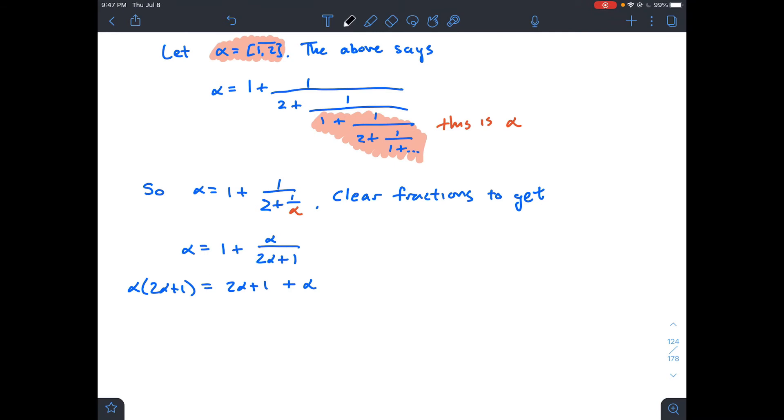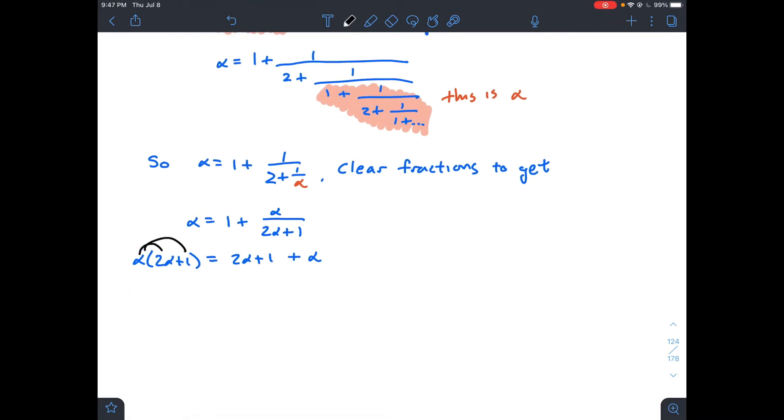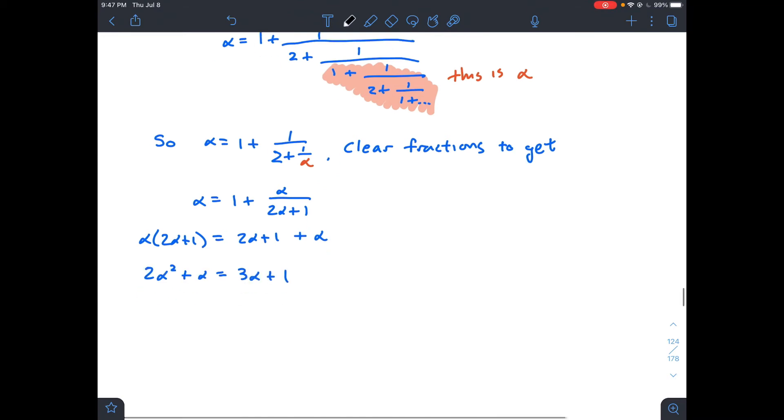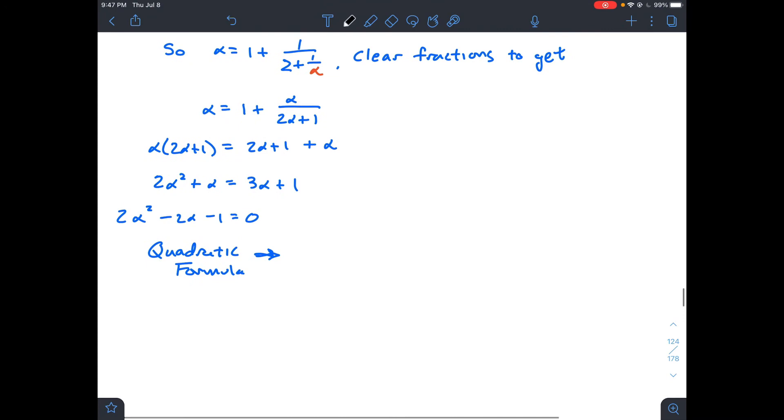I'm going to take this 2 alpha plus 1 and multiply it over. I'm going to clear fractions finally. We're going to distribute this alpha next, combine like terms. Then I like having zero on this side and my positive squared thing on this side because that helps me keep track of the quadratic formula.